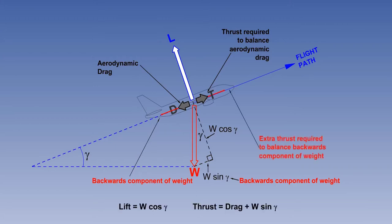In a straight, steady climb, lift is less than weight, because lift only has to support a proportion of the weight, with the proportion decreasing as climb angle increases. The remaining proportion of weight is supported by thrust.